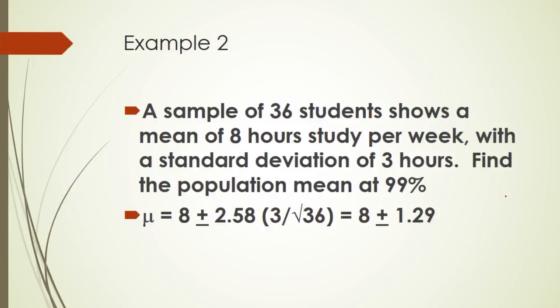Let's do this same thing, but at 99%, which is alpha of 0.01. Same math - the 36 goes down there, the 8 goes there, the 3 goes there. But we look alpha 0.01 up in the table at infinity, because 36 is infinity, and we get 2.58.